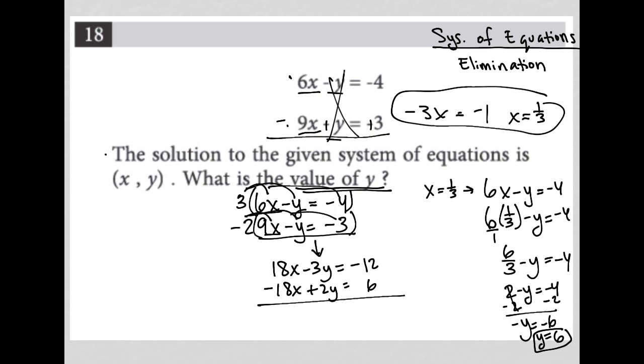The whole reason for multiplying by positive 3 and negative 2 is so that I can eliminate my x terms. 18x minus 18x. What I'm left with is negative 3y plus 2y, which is negative y, and negative 12 plus 6, which is negative 6. And once again, we see that looks just like what we had here. And we know that if negative y equals negative 6, then positive y equals positive 6. And once again, we have our answer. Our answer here is 6.